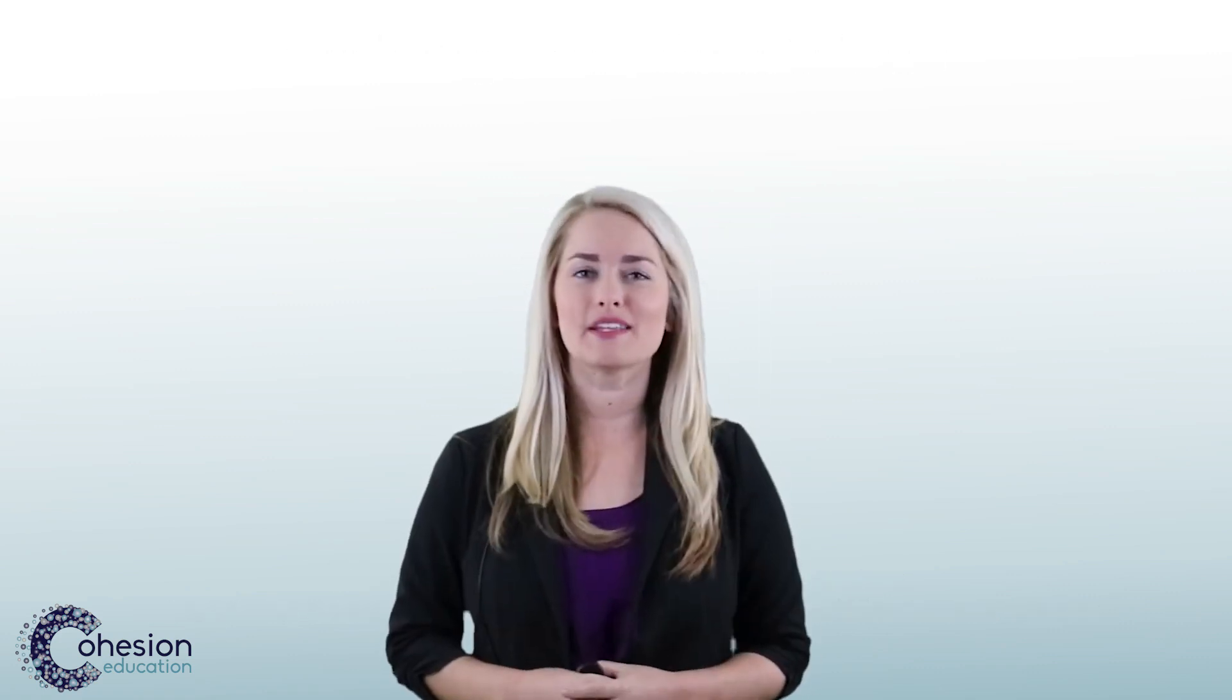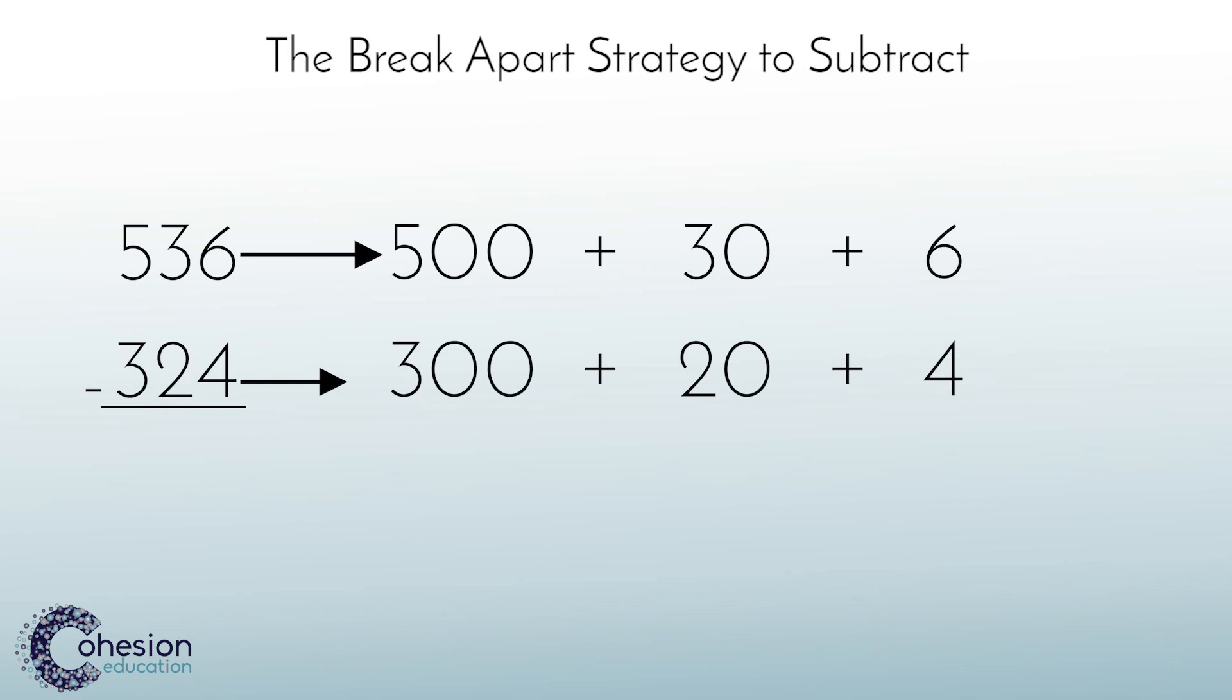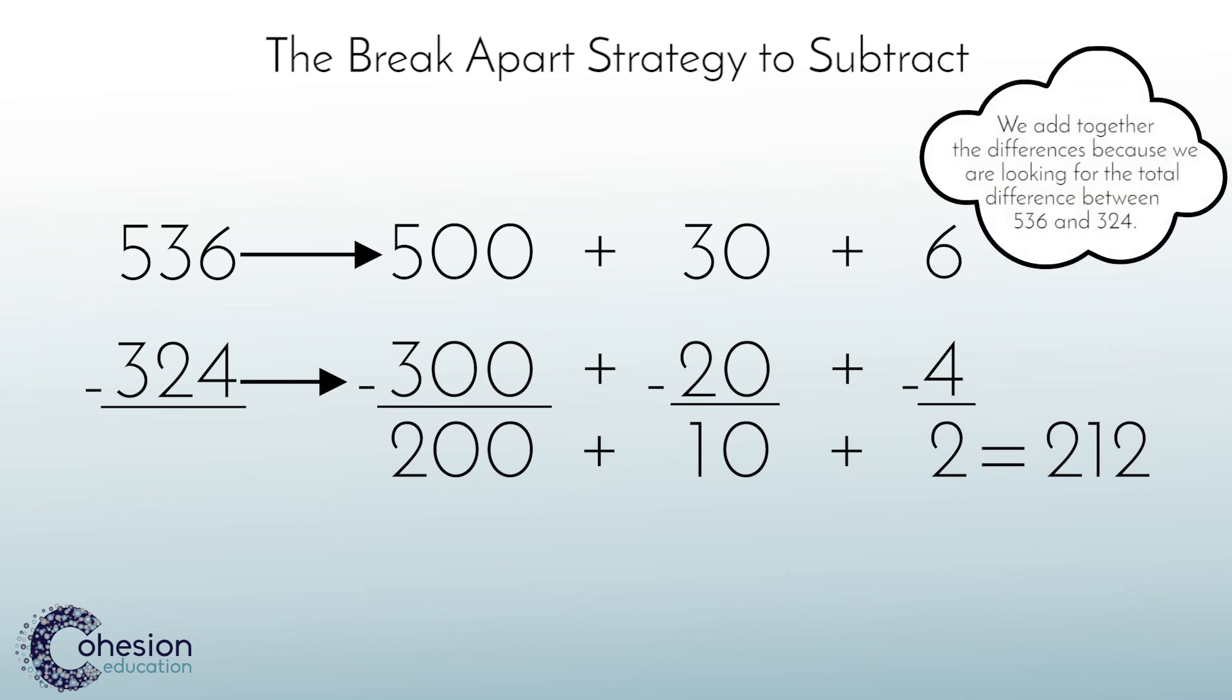The third strategy is the break apart strategy. With this, students will break apart each number by place value in order to subtract each column. When asked to subtract 536 and 324, break each number out according to place value. Start with the hundreds, subtracting 500 and 300, which gives you 200. Next, subtract 30 and 20, which gives you 10, and subtract 6 and 4, which gives you 2. Adding together the differences then gives you 212. We add together the differences because we are looking for the total difference between 536 and 324.